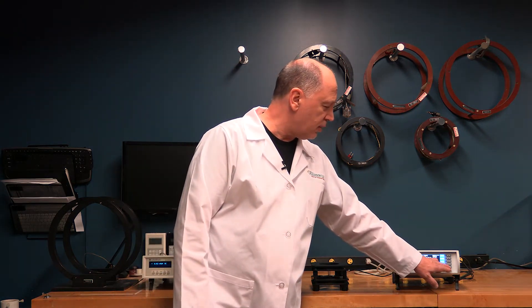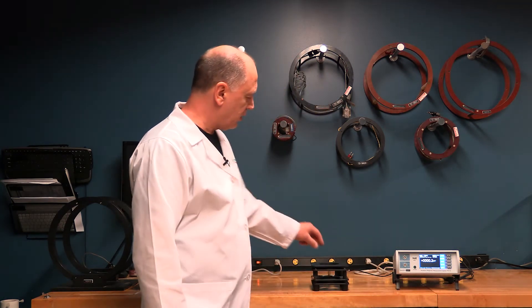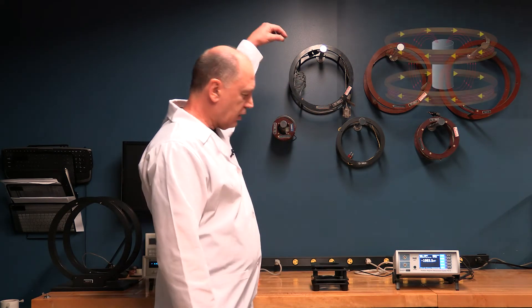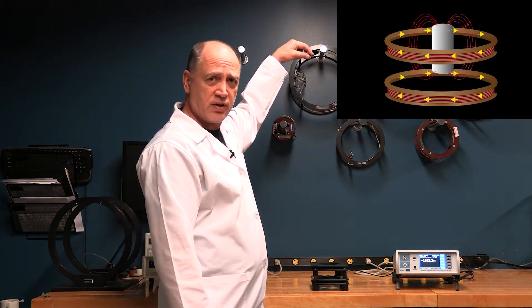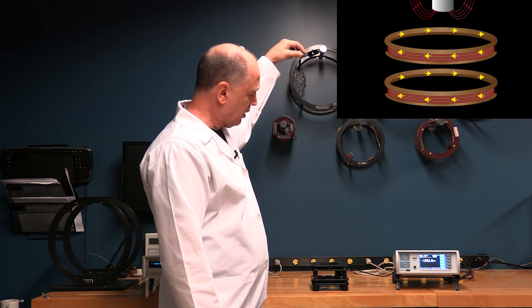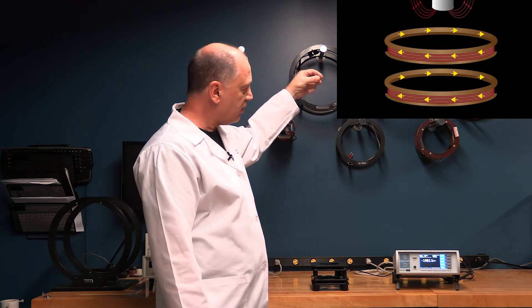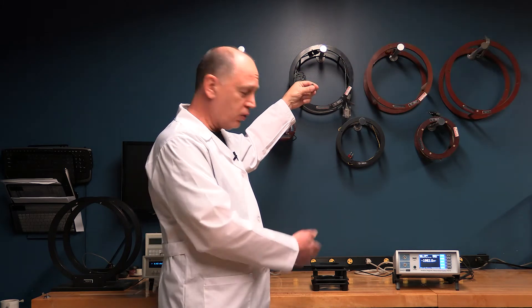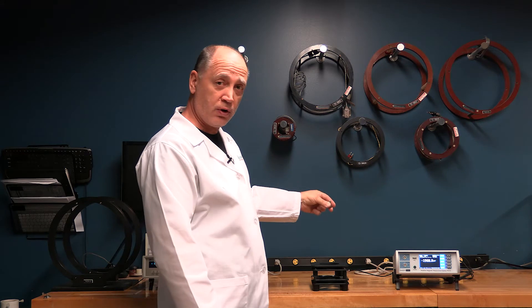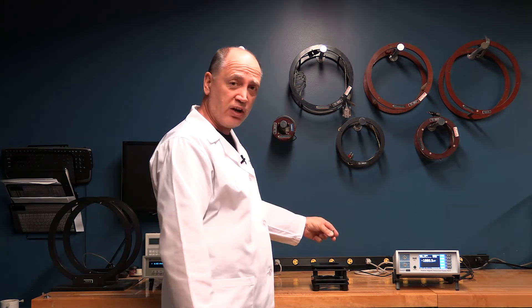So you start by placing the magnet in the middle of the coil. You then hit the reset button on the flux meter and you pull the magnet out as vertically as possible. It's important to pull it out enough so that it doesn't have an effect on the coil. And as you can see here, the closer you get to the coil, the readings changing.